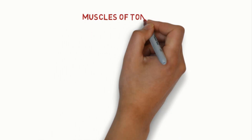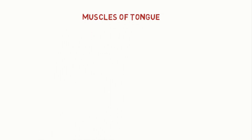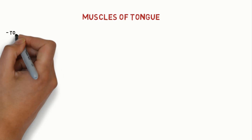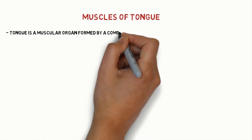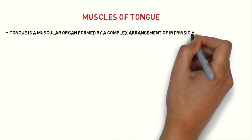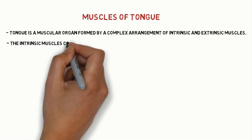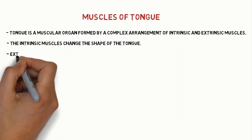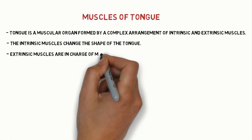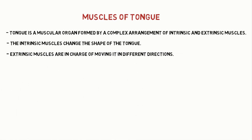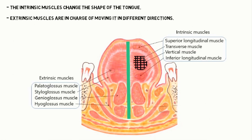Welcome to another episode of Head Sense Simplified. In this episode, we will learn about the intrinsic and extrinsic muscles of the tongue, their origins, and functions. The tongue is a muscular organ formed by a complex arrangement of both intrinsic and extrinsic muscles. The intrinsic muscles change the shape of the tongue, while the extrinsic muscles are in charge of moving the tongue in different directions. Here is the image of both intrinsic and extrinsic muscles.